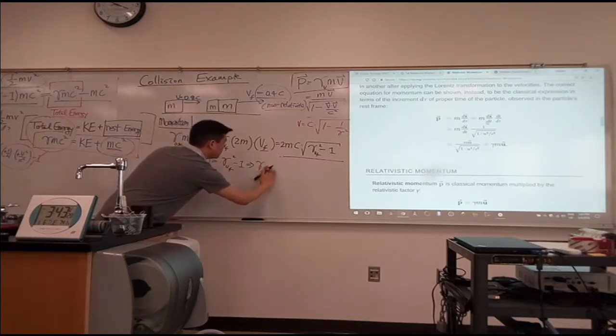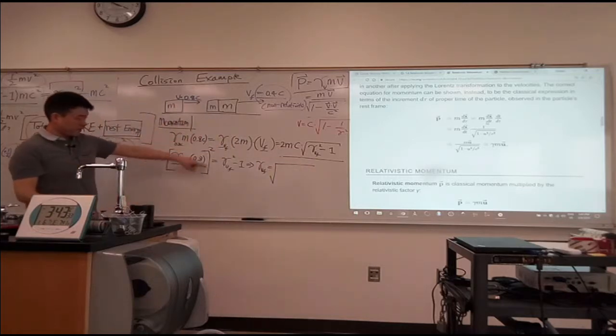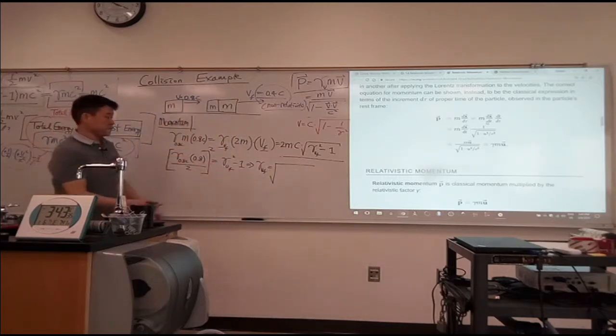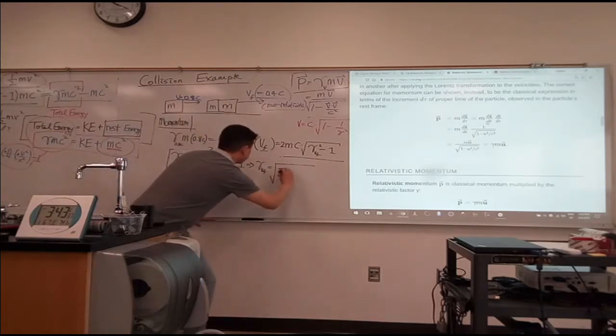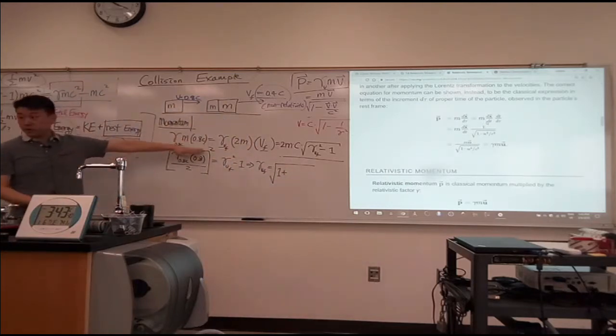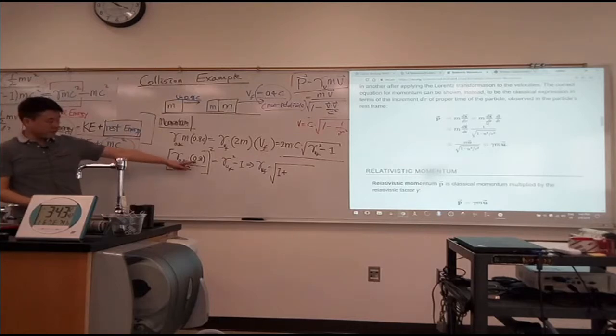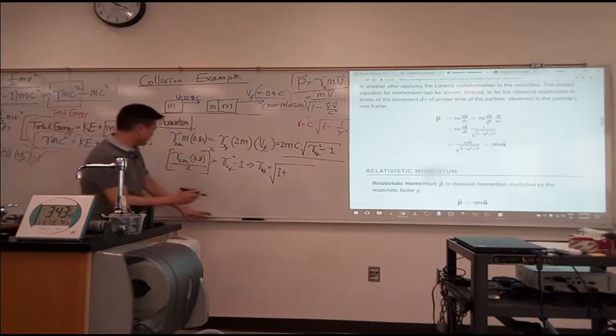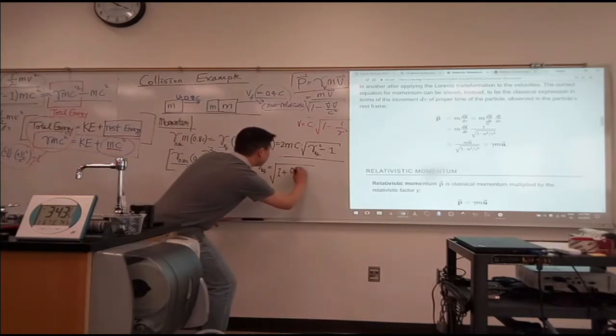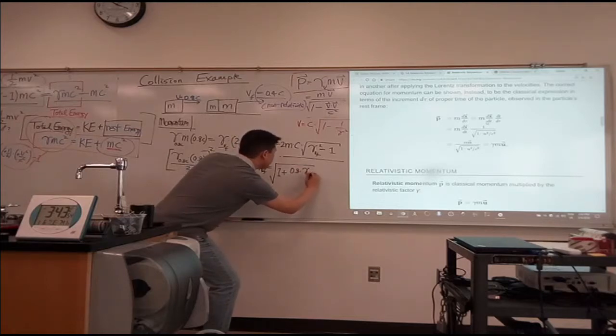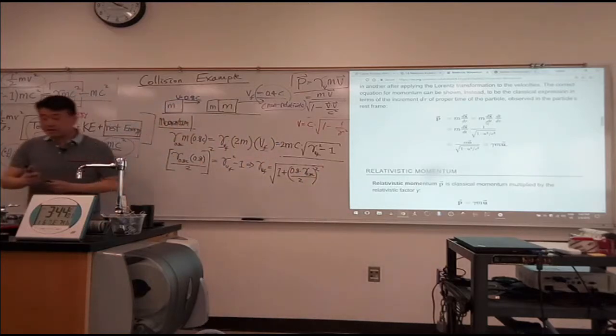So solving for gamma, gamma V final is equal to square root of this whole thing plus 1. So 1 plus... And everything here is actually numerical. Based on V equals 0.8C, there's a number associated with this. And so that's why I'm just leaving it in that form because I'm just going to plug in the numbers. So 0.8 times gamma 0.8C over 2, the whole thing squared. So that's the gamma V final.